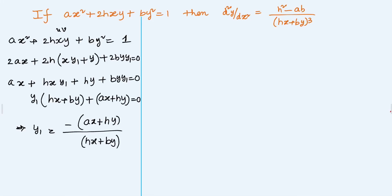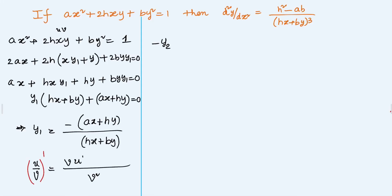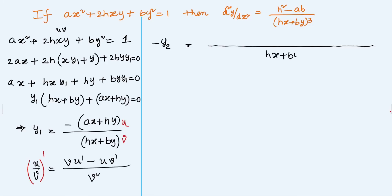Now that we have y₁, we can proceed to find y₂. We differentiate y₁. Moving the minus to the other side, we write -y₂ equals the derivative of (ax + hy)/(hx + by). We apply the quotient rule: d(u/v) = (v·u' - u·v') / v². Here u = ax + hy and v = hx + by, so the denominator is (hx + by)².